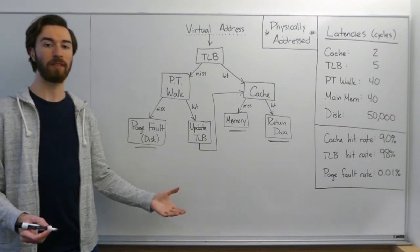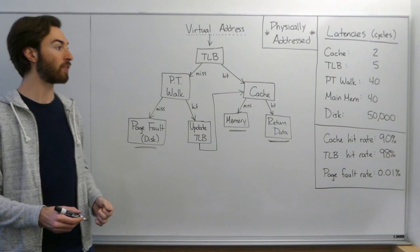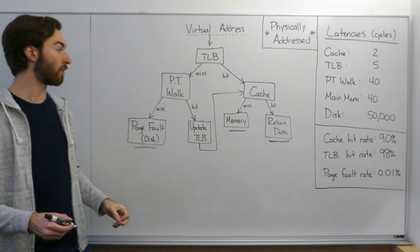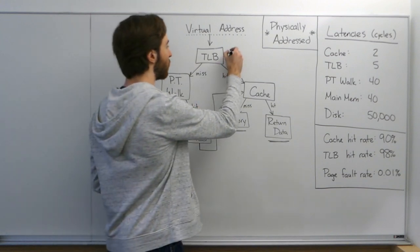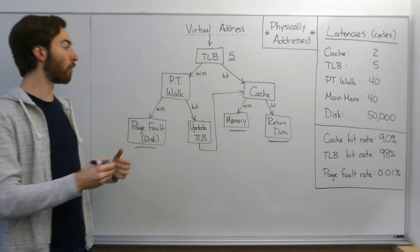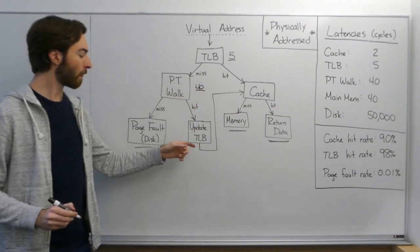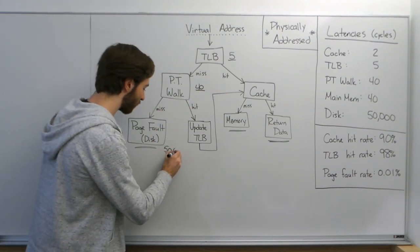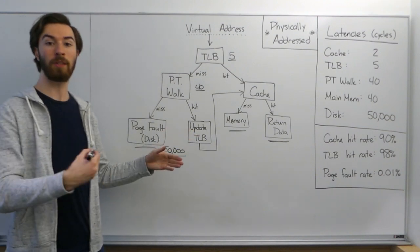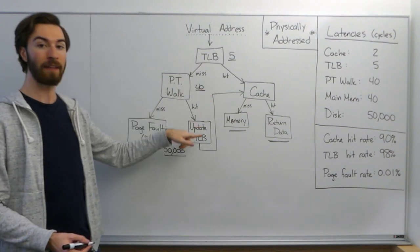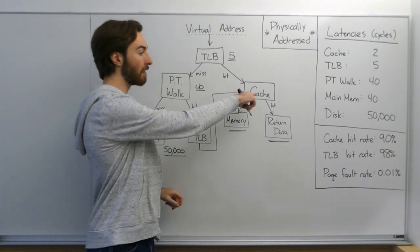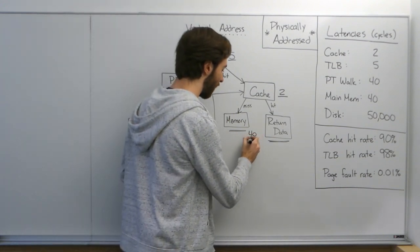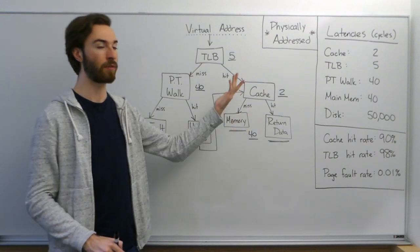So in order to calculate the average time it takes to return the data given this physically addressed cache, it'll be easiest if we just go through filling in some of the information on this flowchart, starting with the latencies of all these different components. We're given that the TLB takes 5 cycles to complete, the page table walk takes 40 cycles to complete, the page fault when you have to go all the way to disk takes 50,000 cycles to complete. Updating the TLB we assume can be done in parallel with accessing the cache, so we don't have any latency for updating the TLB. But accessing the cache takes 2 cycles, and accessing memory takes 40 cycles. And of course, if there was a cache hit, then you don't need to access anything else and can just return the data that you got.